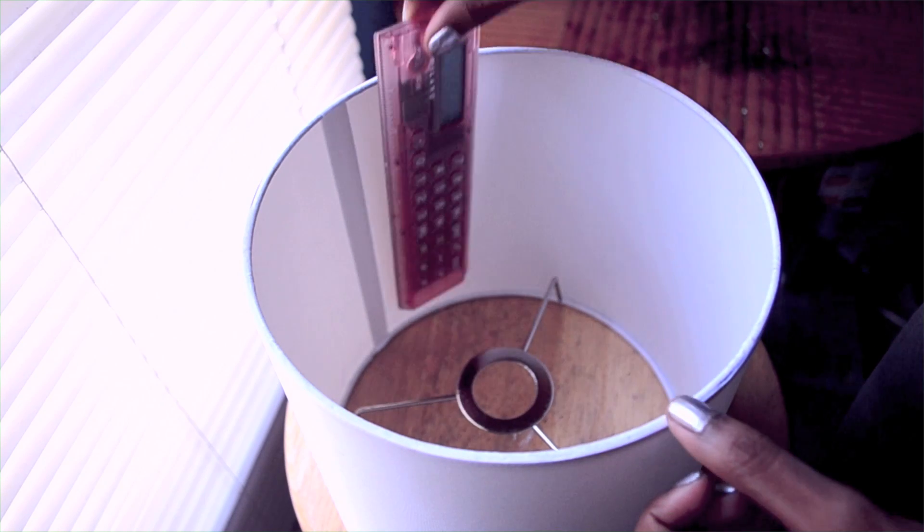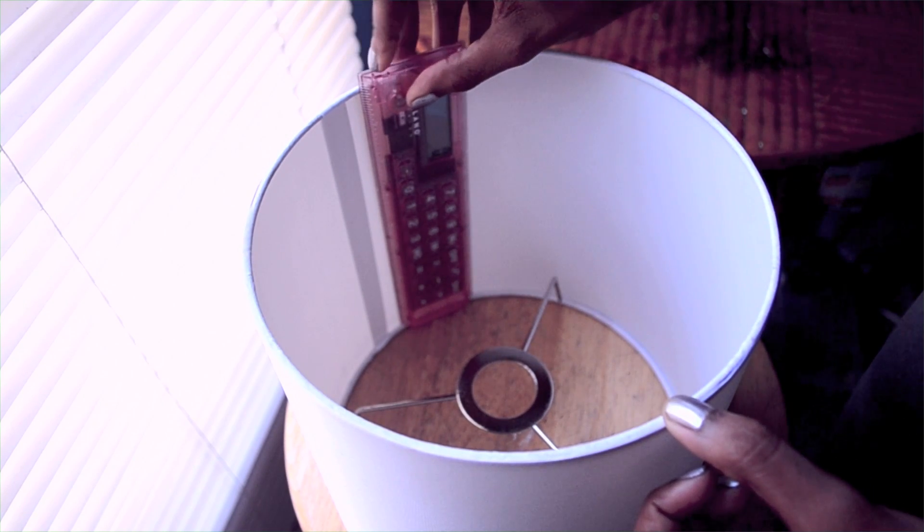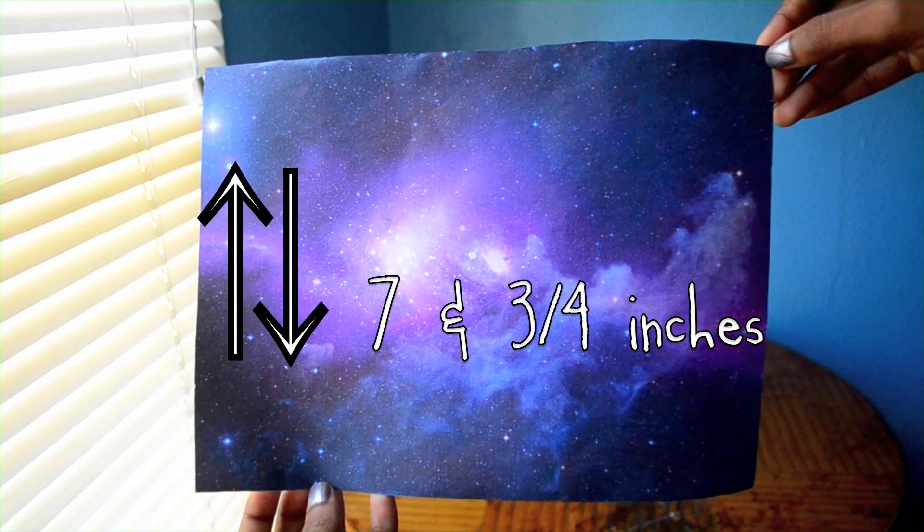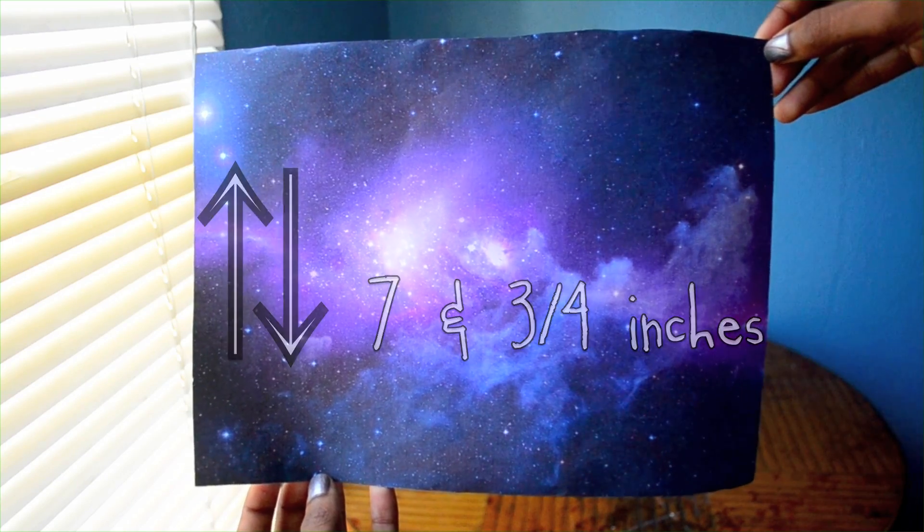Here I'm measuring my lamp. There are two important measurements. The first is height. My lamp is just shy of 8 inches, so I'm cutting my galaxy design into a rectangle that is 7 and 3/4 inches tall.